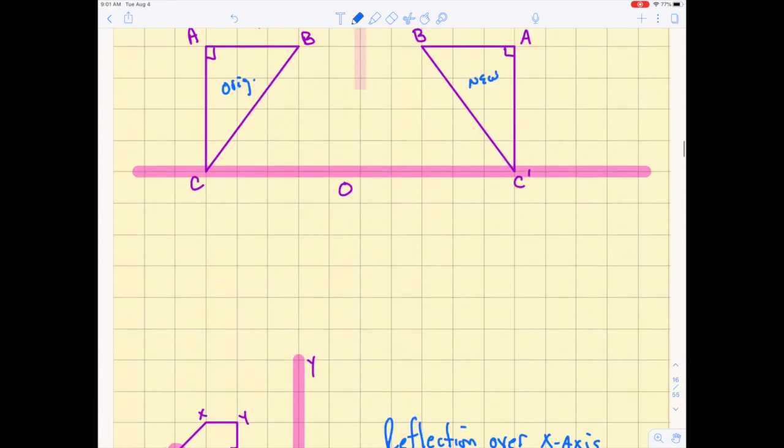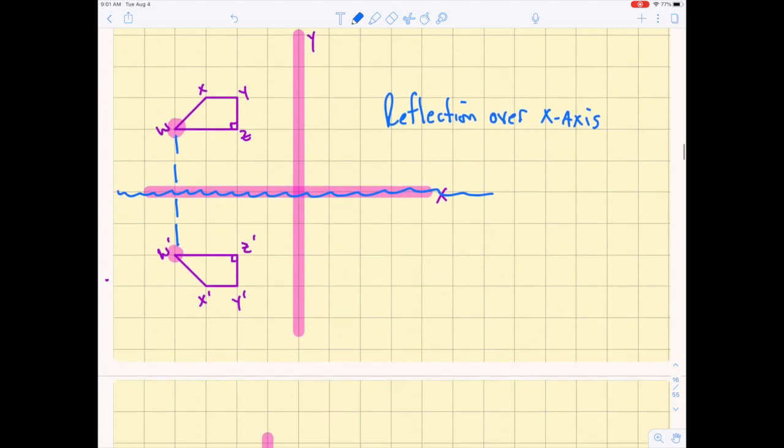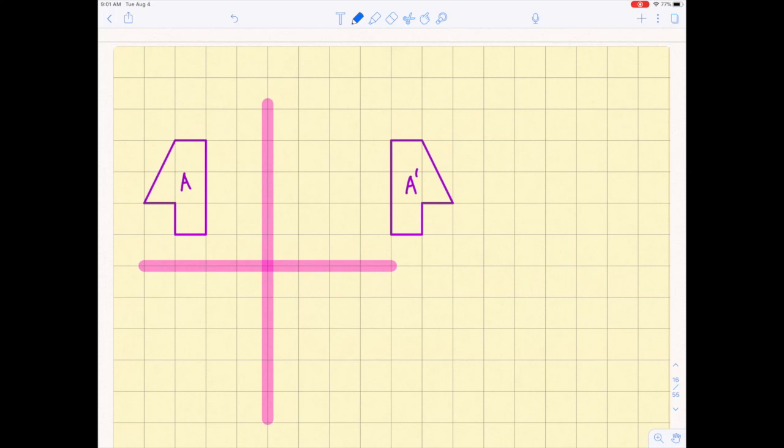So a reflection across the y-axis would have gone left and right. I deleted that y-axis there. Reflection over the x-axis is up and down, and if you have something that's left and right or up and down, but it doesn't look like the other ones, right?